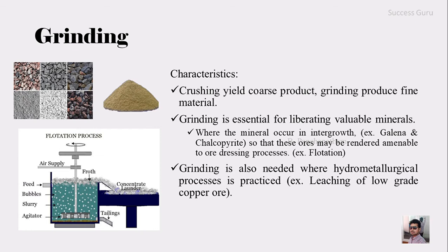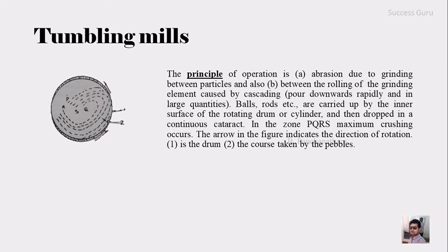So let us go to the first mill type: the tumbling mill. The basic principle of operation is that the material will be abraded due to grinding between the particles themselves, and also with the rolling grinding elements, which produces fine material. The material breaks down in two ways: they collide with one another inside the tumbling mill, and they also collide with the surrounding surface — the container wall.